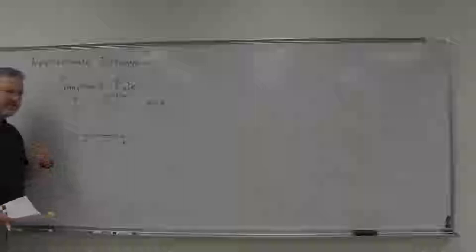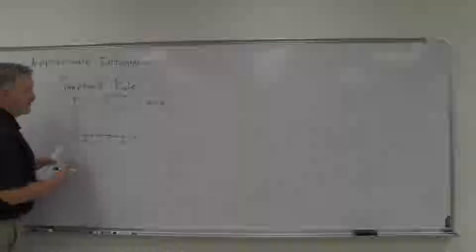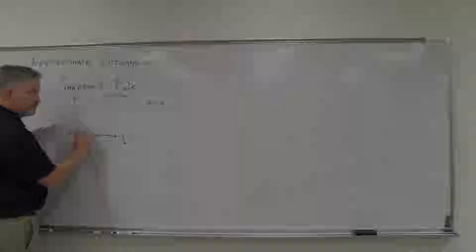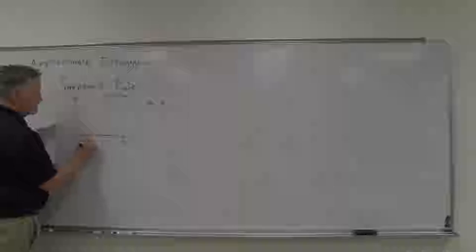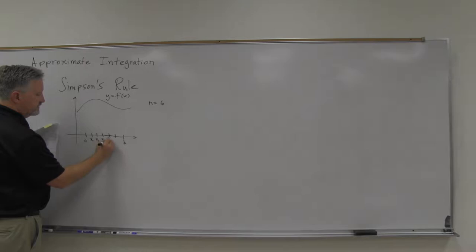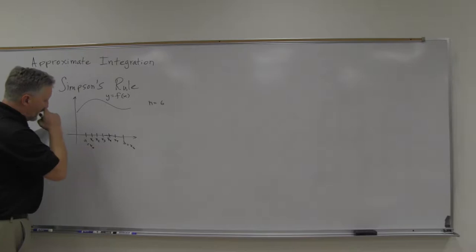It turns out — you don't have to worry about all this, but here's how it plays out. We kind of group them in threes, by endpoints, because it's two sub-intervals each. So this is x1, x2, x3, x4, x5, and this is x6, and this is x0.